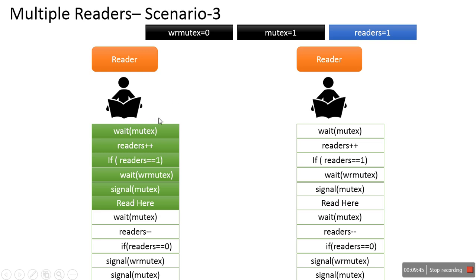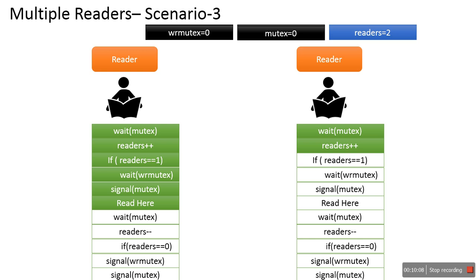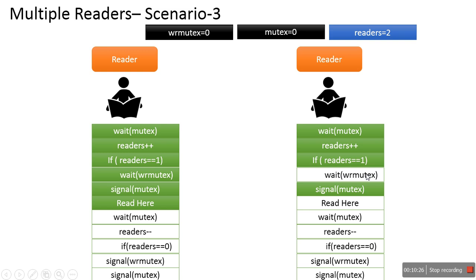While Reader1 is already reading, Reader2 arrives and starts executing. It calls wait(mutex), which decreases the mutex semaphore — not less than 0, so it continues. Then readers++ makes readers=2. It then checks if readers==1, but this is not the first reader, so that condition is not satisfied and wait(wr_mutex) is not executed. Reader2 then calls signal(mutex), increasing it to 1, and also starts reading. So two readers are reading at the same time.